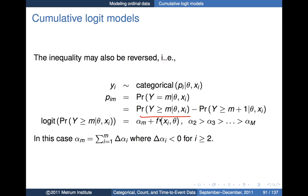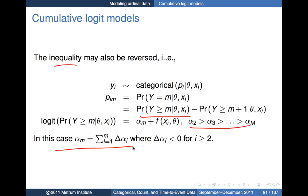The cumulative probabilities can also be written using the inequality in reverse order — Y greater than or equal to M — which reverses the inequalities for our intercept term and requires a slightly different parameterization. Both approaches are essentially equivalent and you'll see both methods used in the literature. There's no particular reason for choosing one versus the other; it's more a matter of convention.